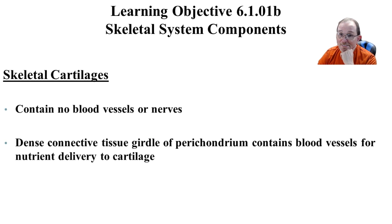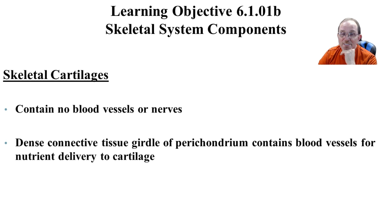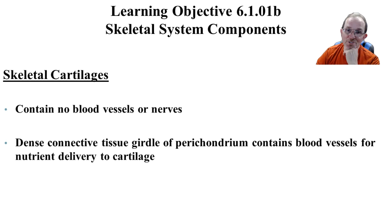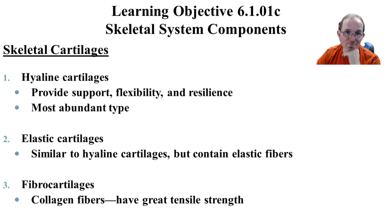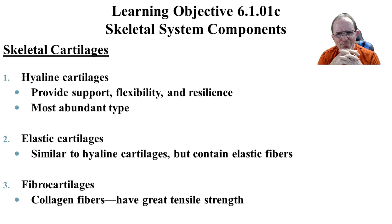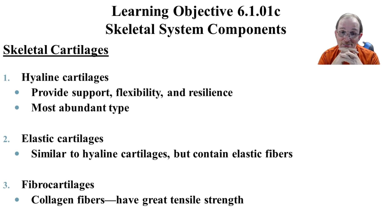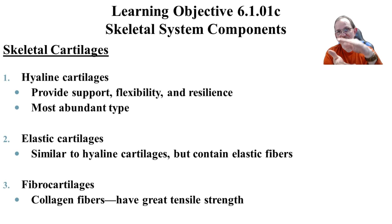Skeletal cartilage — this is hyaline — has no blood vessels, no nerves. There is a dense connective tissue around it called the perichondrium, and that's going to have the blood vessels, the life support system for that cartilage. Cartilage, when it gets damaged, heals very, very slowly. Hyaline cartilage provides support and flexibility and is the main type. Elastic cartilages are similar but have elastic fibers — mainly your ears. Fibrocartilage has a lot of strength and is good for compression; these are found between our vertebrae.